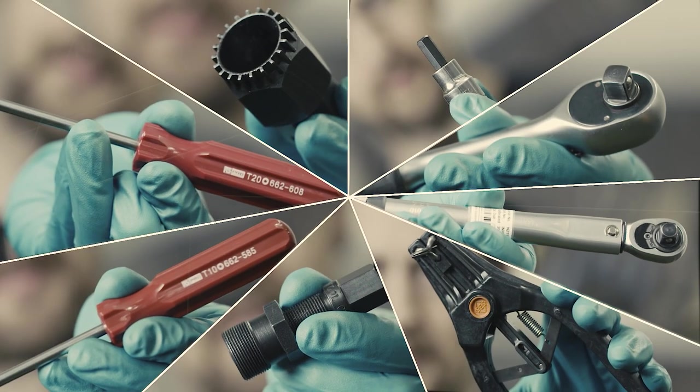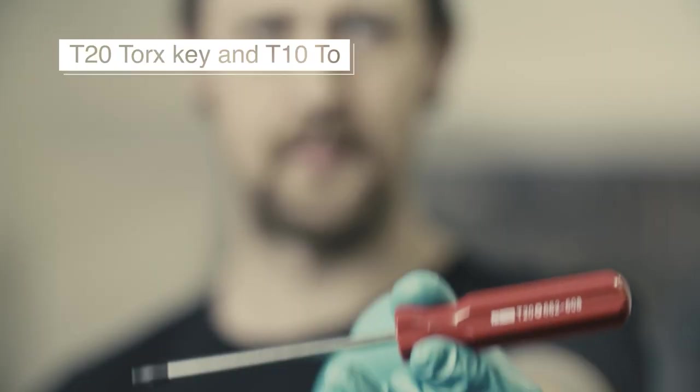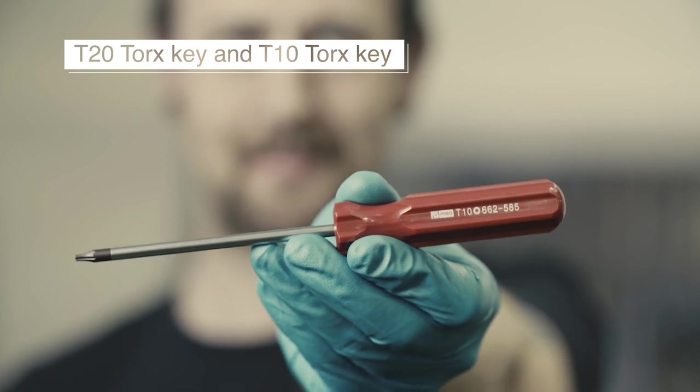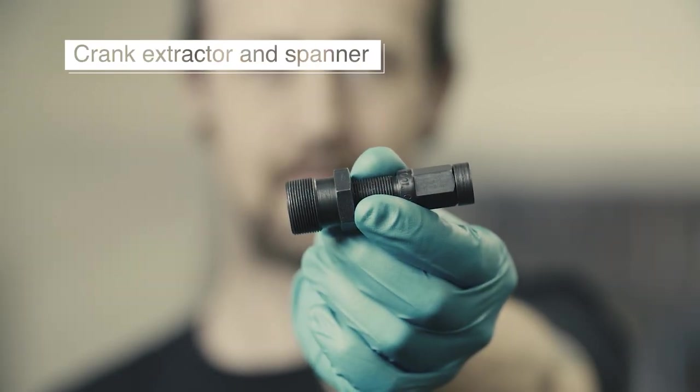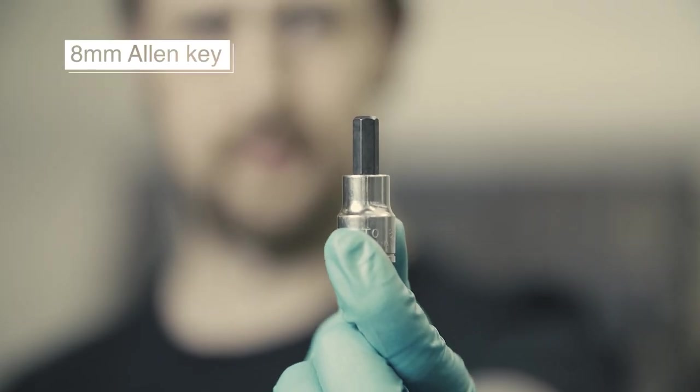First of all, ensure that you have all the tools required to perform the bottom bracket replacement. You will need a T20 torx key and a T10 torx key, crank extractor and spanner to operate it, and an 8mm allen key to remove the crank bolt.